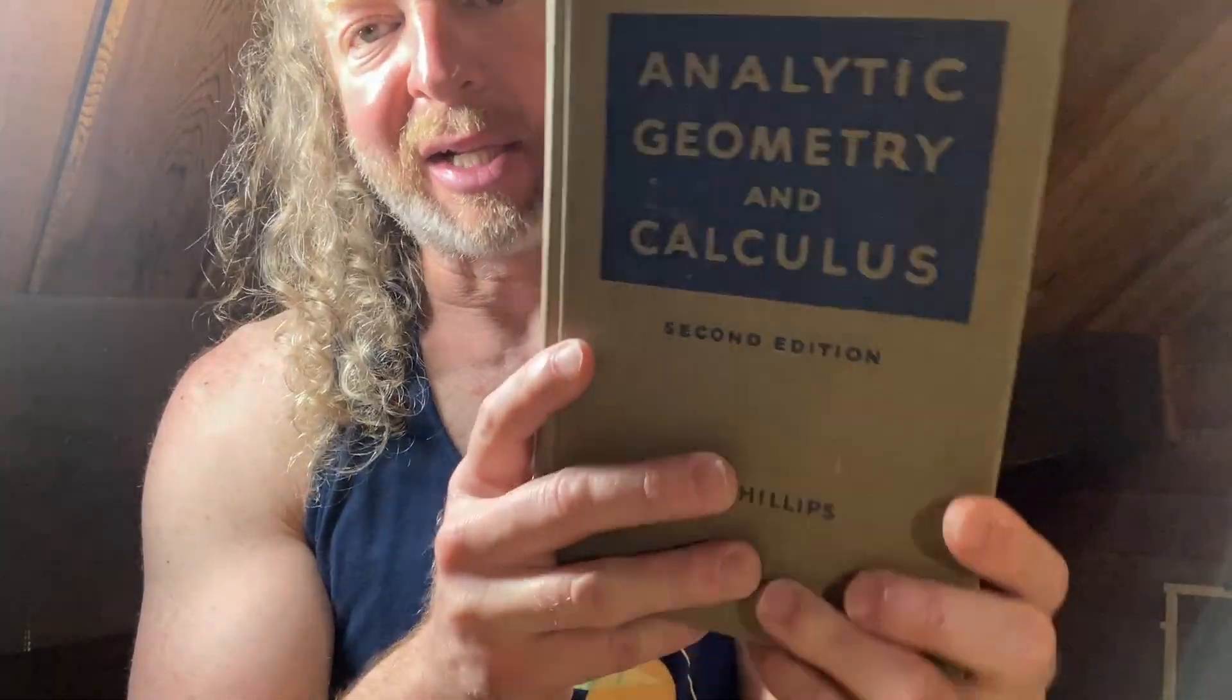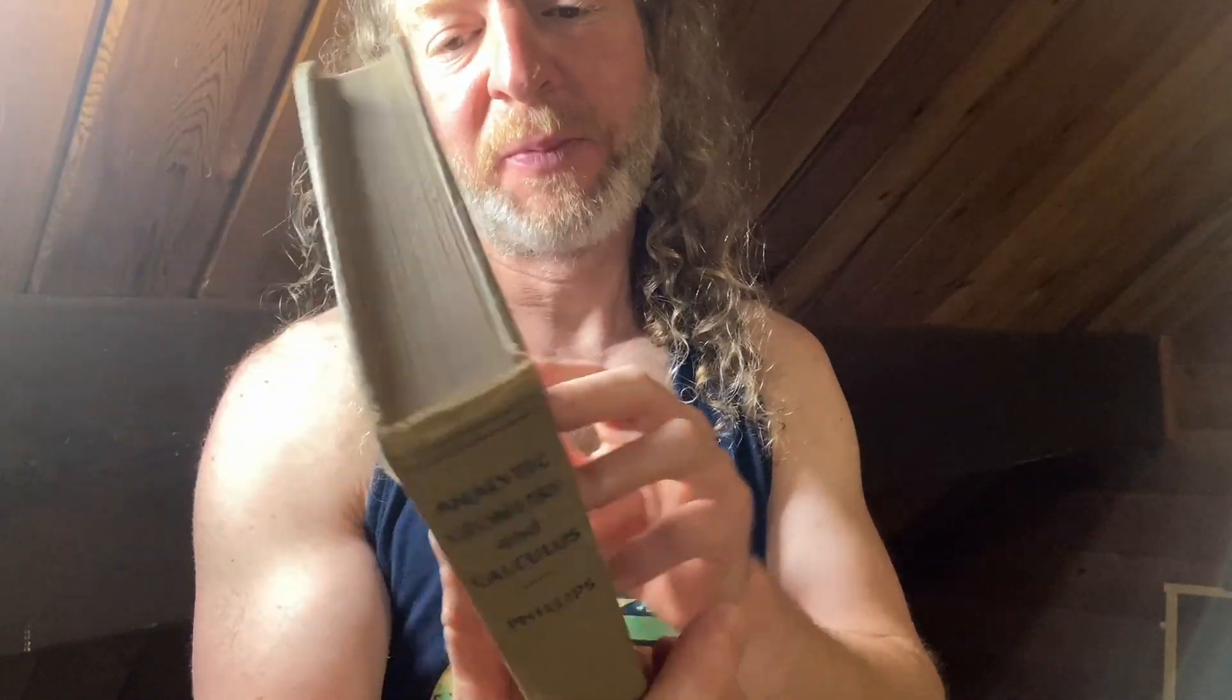This is his book on Analytic Geometry and Calculus, the second edition. Finding the physical books, the actual hardcover copy, is pretty hard but I know there are some copies out there. I'll try to find some and leave a link in the description. But you can get the book for free.